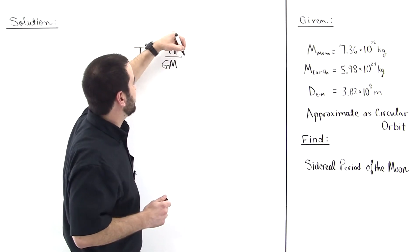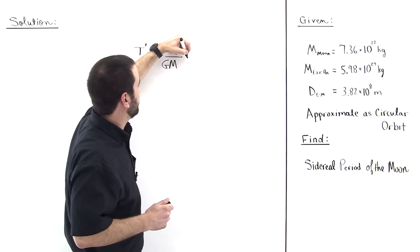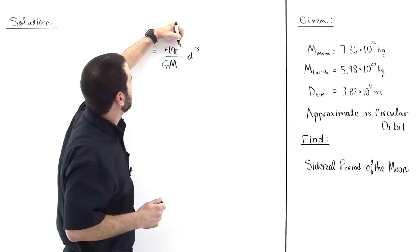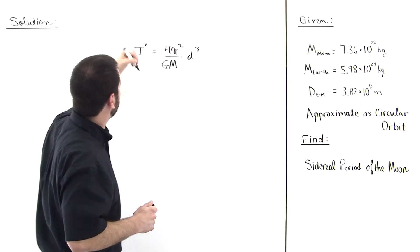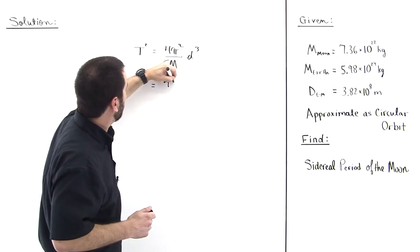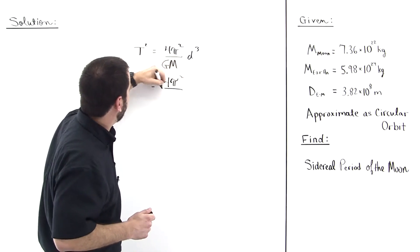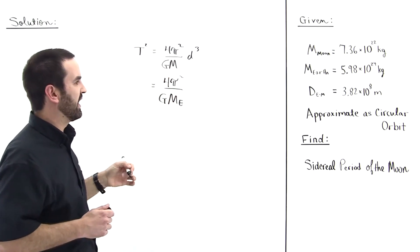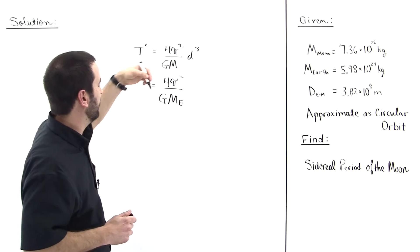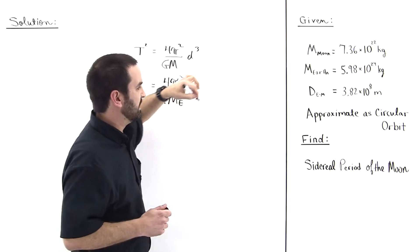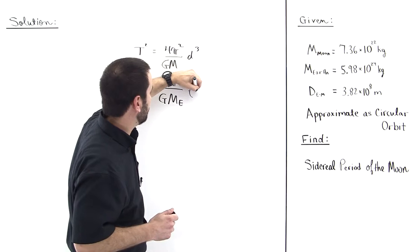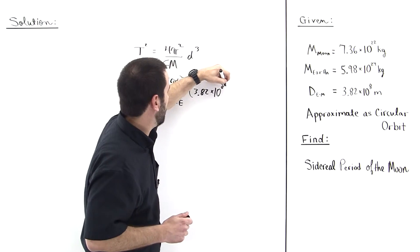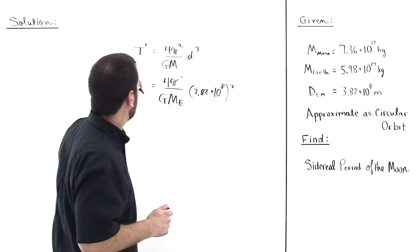And then multiply times the distance between them cubed, so we can put a d here. Substituting in: 4π squared, I'm going to leave these down here as letters, g, this is the mass of the earth that goes in here, 5.98 times 10 to the 24, and then times d cubed, that will be the earth-moon distance, 3.82 times 10 to the 8th, and then all of that is cubed.